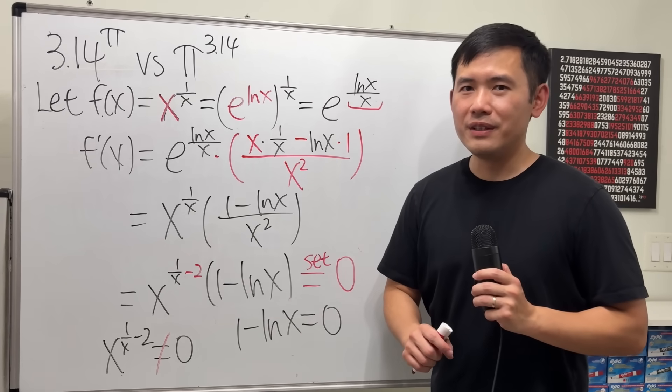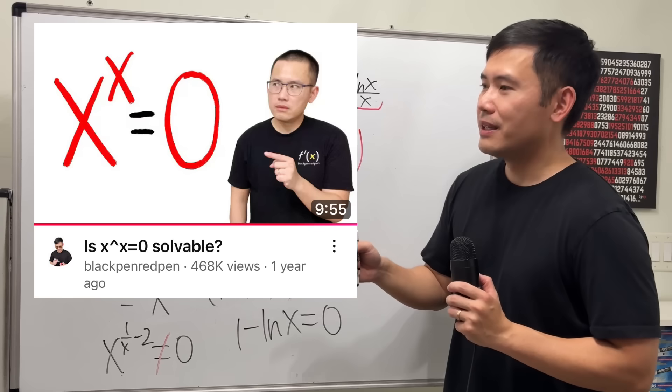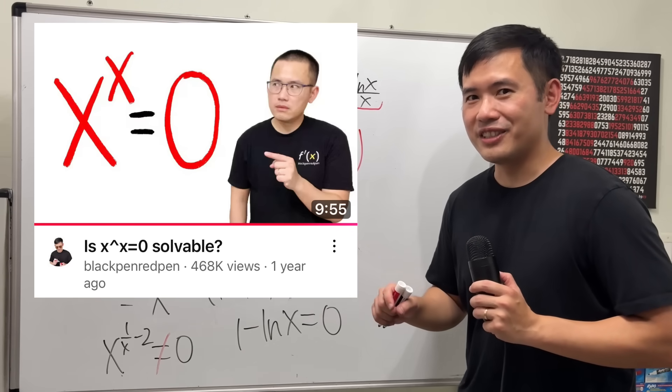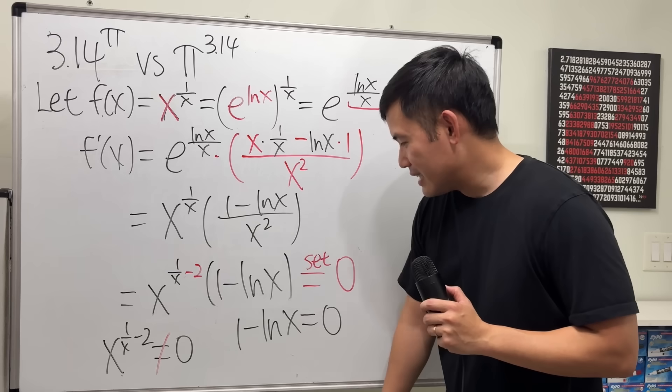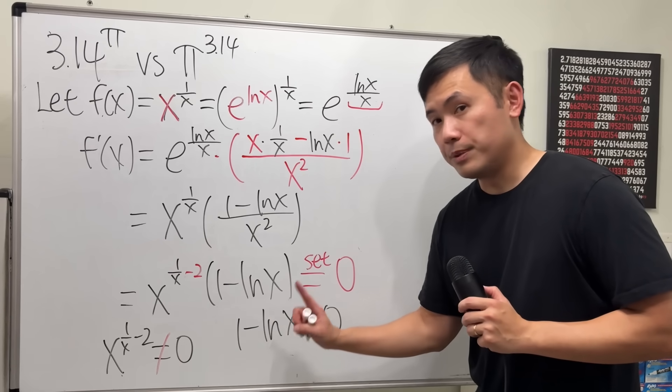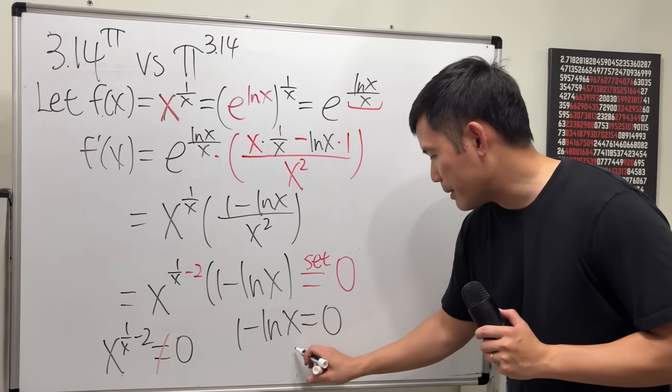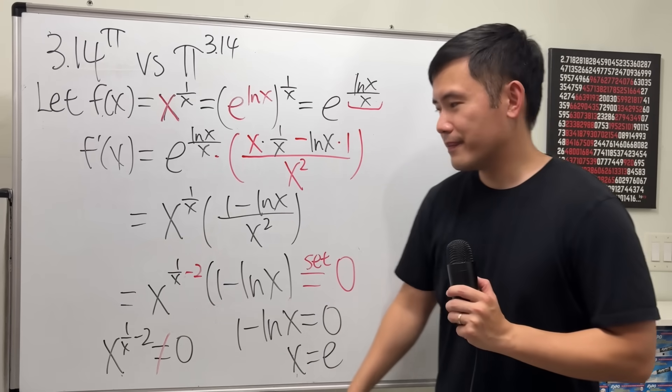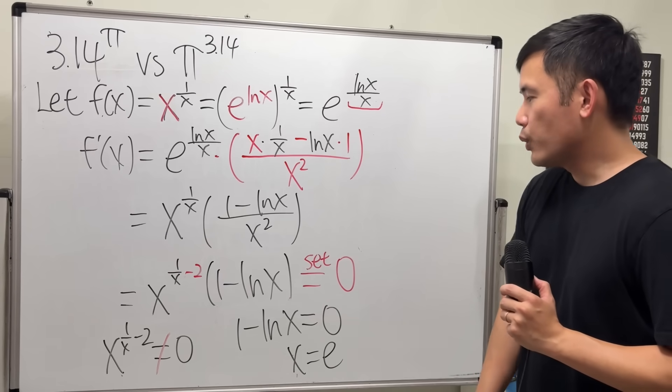And in fact, I have a very special video on this unique equation. Can x to the x power be 0? Well, you guys can go ahead and check that out. The link will be in the description. Now, for this right here, it implies that ln x has to be 1. And in order for that to happen, x has to be e. So, this is the only critical number.